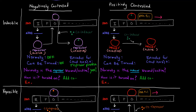How can this system be turned on? We add a co-inducer or inducer. The inducer binds the repressor on the operator, causing it to fall off and making the repressor inactive. Here I've represented the inducer in green binding the repressor and making it inactive. A familiar example of this is the lac operon, which we've talked about in another video.